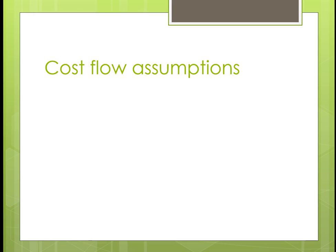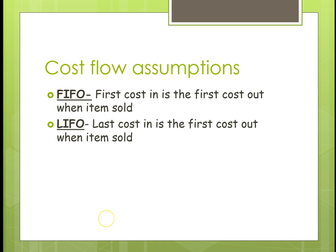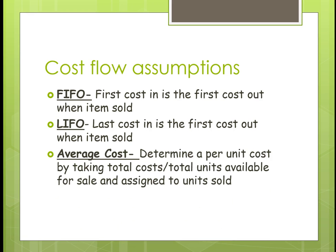Now, cost flow assumptions — we're going to look at three. We have FIFO, which is first in, first out, when we're identifying the costs. LIFO is the last cost in, first cost out at the point of sale. Remember that, because we're doing Perpetual, so it matters when things are bought or sold. And average cost — we're going to determine a per unit cost every time we make a sale, which is what makes this a little more complicated.